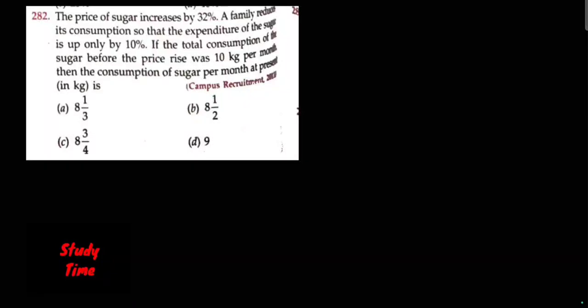Question number 282. The price of sugar increases by 32%. A family reduces its consumption so that the expenditure of sugar is up only by 10%. If the total consumption of sugar before the price rise was 10 kg per month,